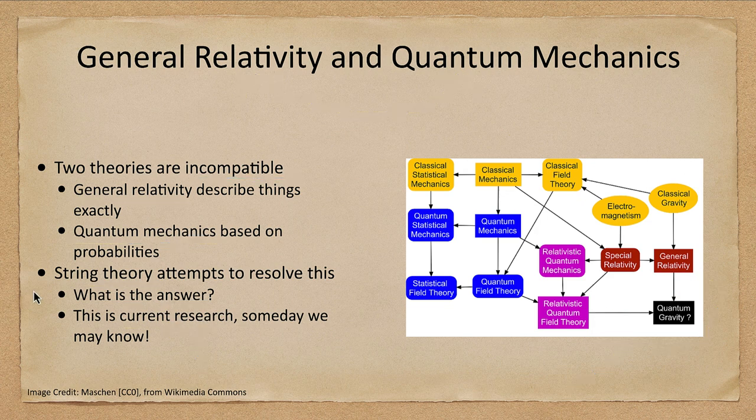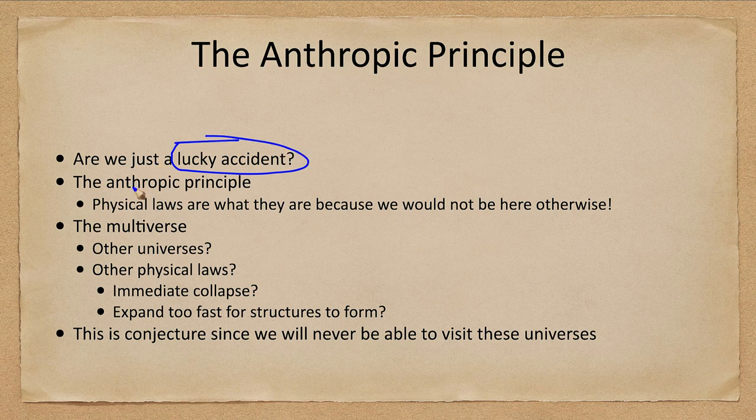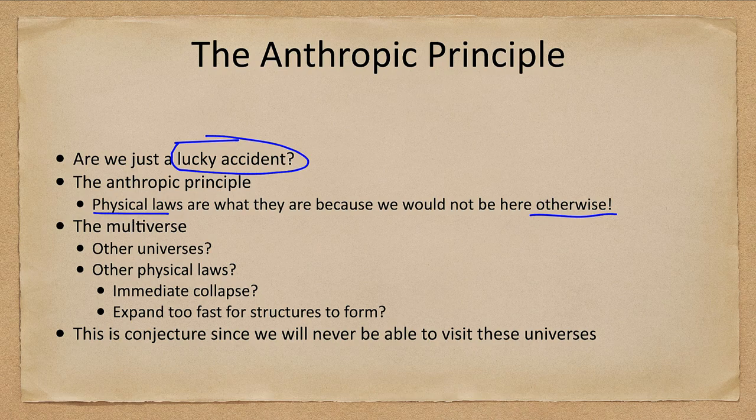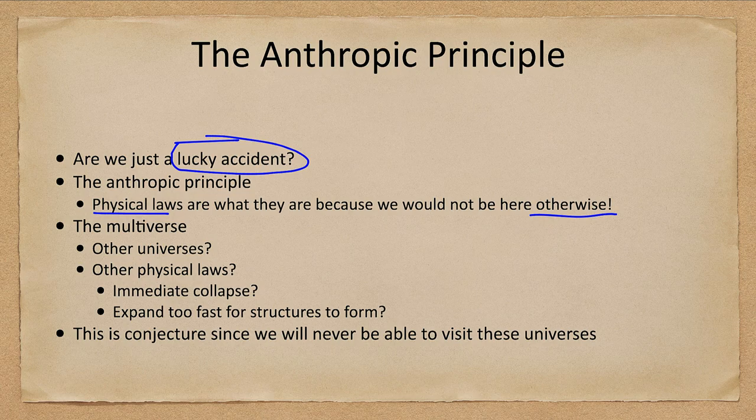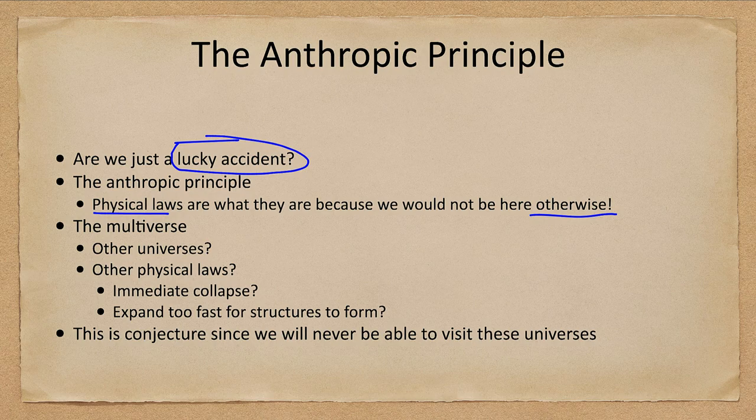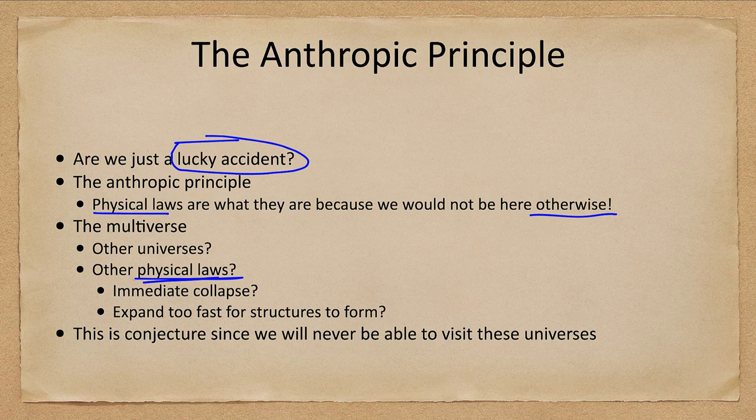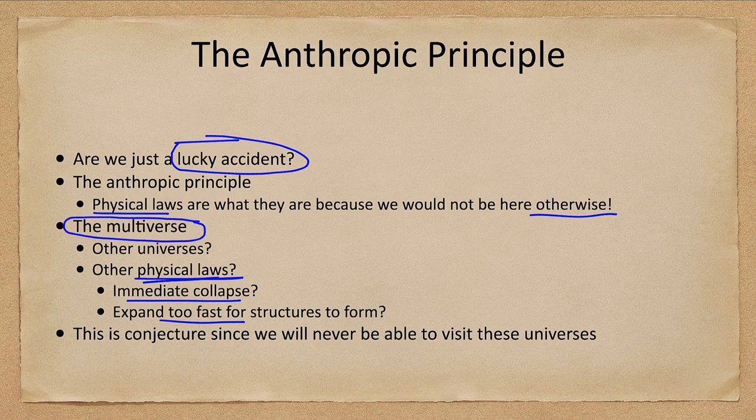The last thing we want to talk about is what we call the anthropic principle, which really suggests that we are just a lucky accident. The anthropic principle says that physical laws are what they are because we wouldn't be here otherwise. Could there be other universes with different physical laws? Well, there could be. But if it is a universe where gravity is repulsive instead of attractive, then no material will ever combine together. You might have atoms that could combine under other forces if they work as they do in this universe. But they would not be able to form larger objects as we do under gravity. There could be completely different physical laws. They could collapse immediately or expand too fast for any structures to form. Sometimes we talk about the multiverse. Could there be other universes out there?